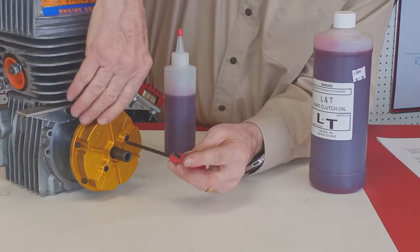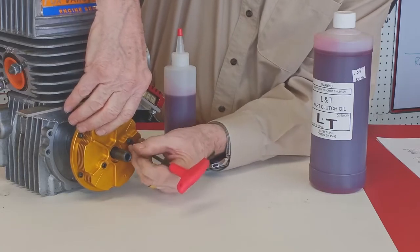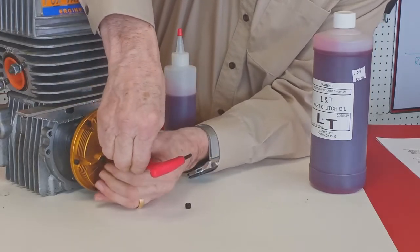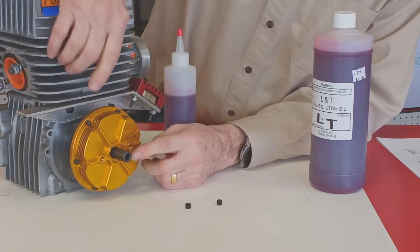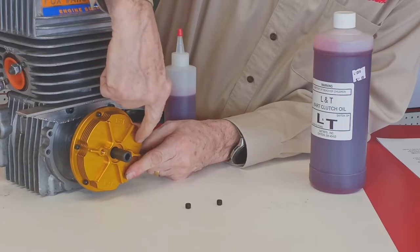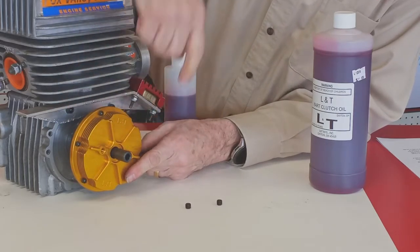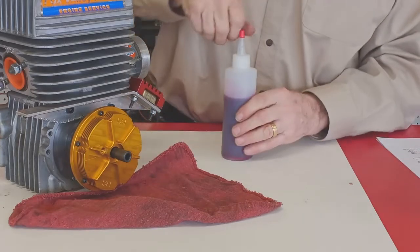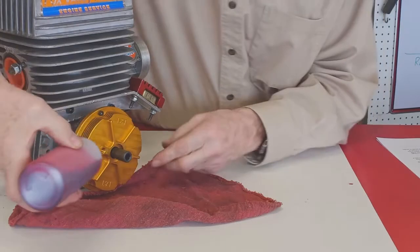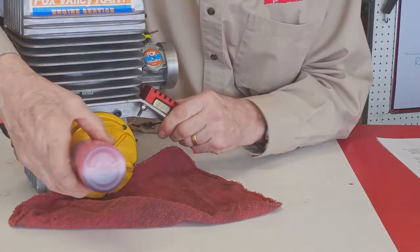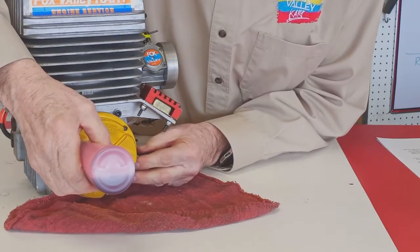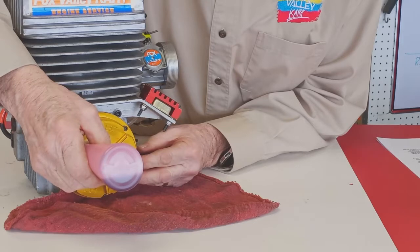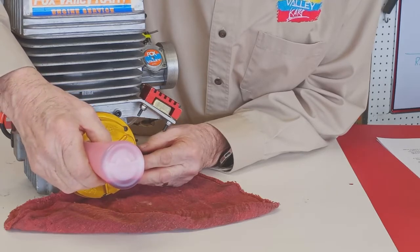Start by removing both oil filler plugs. Be careful not to lose these. You'll need them in a minute. Then you see this line that's machined in the cover? That's your oil level reference line. If you fill through the upper hole, set that line horizontal, fill through the upper hole until the oil starts to come out the lower hole. Right there.